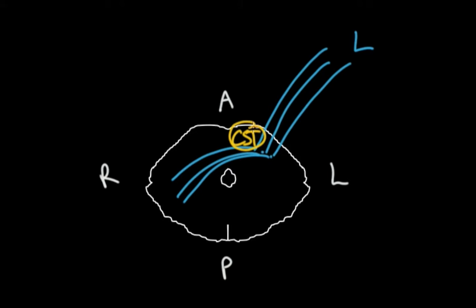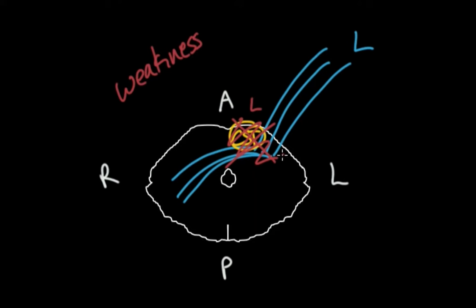So if you have a stroke on the left side, you're going to hit the corticospinal tract on the left, causing weakness on the right side of the body. You're also going to hit the crossing cerebellar fibers heading toward the right cerebellum, causing ataxia also on the right side. So one major localization for ataxia hemiparesis is the base of the pons.